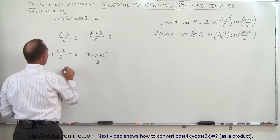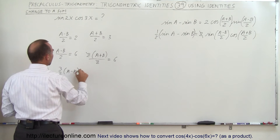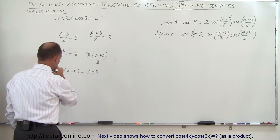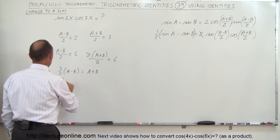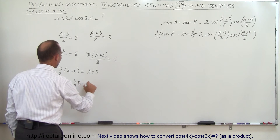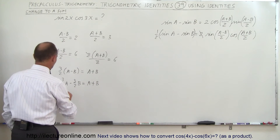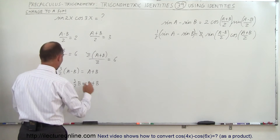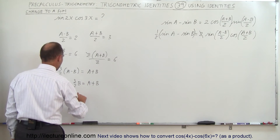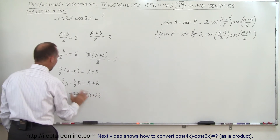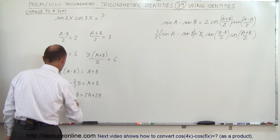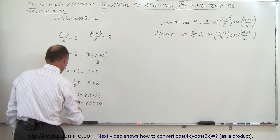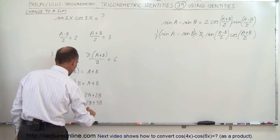The 2's cancel, so I can write that 3/2 times (a minus b) is equal to (a plus b). So 3/2 a minus 3/2 b equals a plus b. It's probably better to multiply both sides by 2 to get rid of the fraction: 3a minus 3b equals 2a plus 2b. Moving all the a's to one side and all the b's to the other: 3a minus 2a equals 2b plus 3b, so a equals 5b.